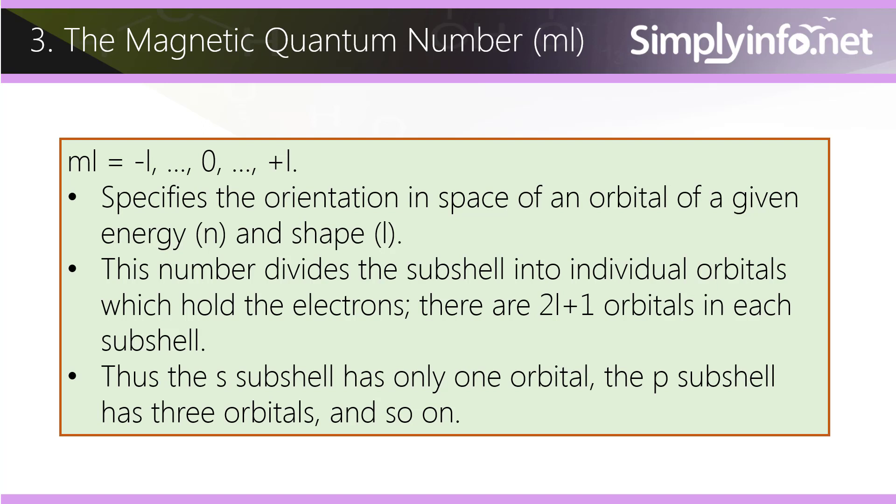Thus, the s subshell has only one orbital. The p subshell has three orbitals, and so on.